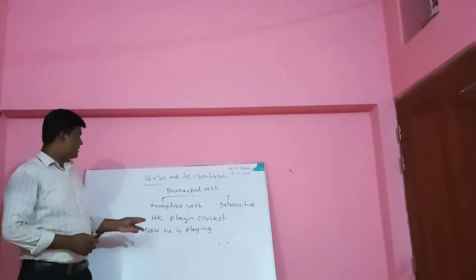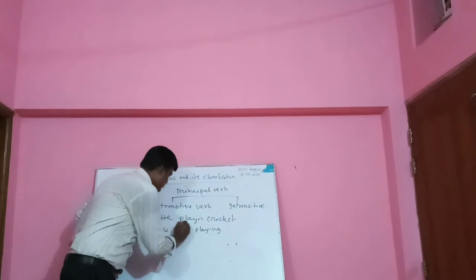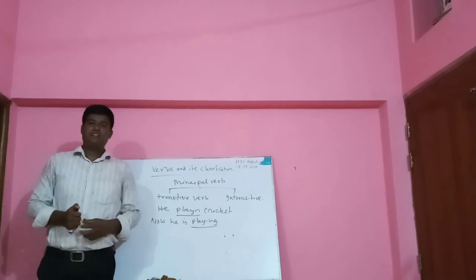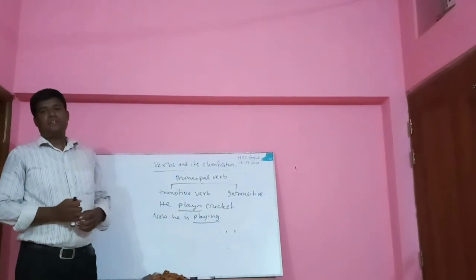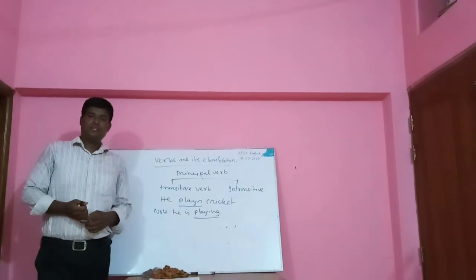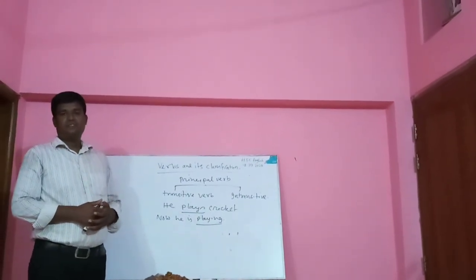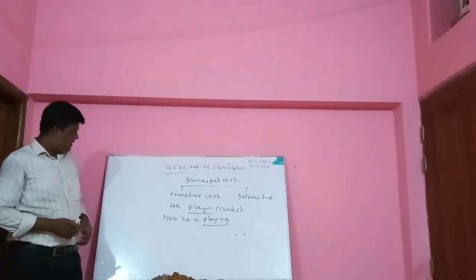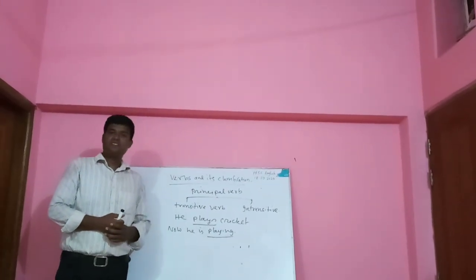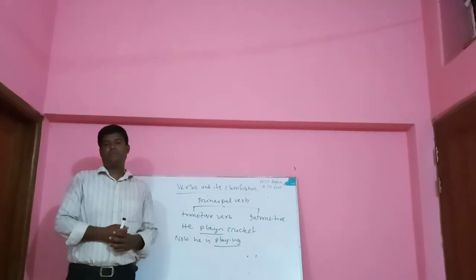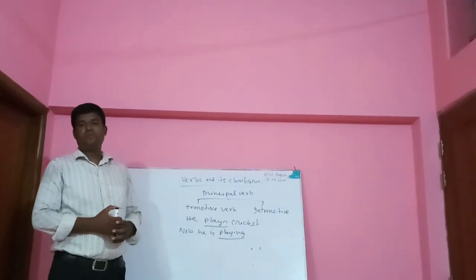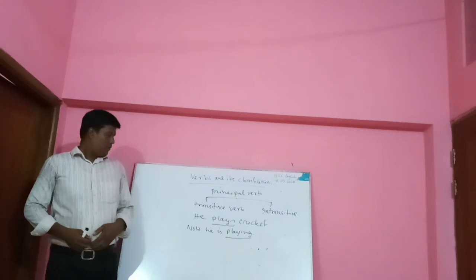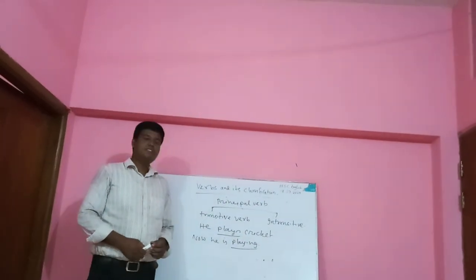Transitive verb example: 'He plays cricket.' 'Plays' is a transitive verb because it takes the object 'cricket.' In the second sentence: 'He is playing.' 'Playing' is an intransitive verb because there is no object here — it does not need any object. So 'play' here is an intransitive verb.